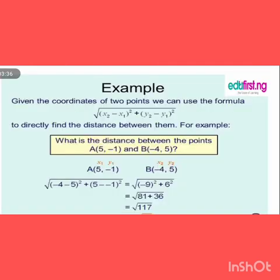So we'll look at another example here. They said given the coordinates of two points, we can use the formula. In this case, we have what is the distance between the point. Point A is having two coordinates, 5 and minus 1, and point B is having two coordinates, which is minus 4 and 5. So now the 5 there is for x1, then y1 is for minus 1, then minus 4 is for x2, y2 is 5.